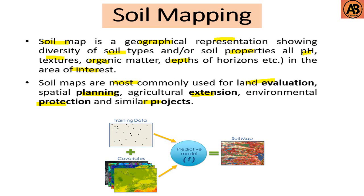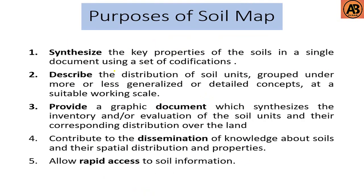The purposes of a soil map are: first, to synthesize the key properties of soils in a single document using a set of codifications; second, to describe the distribution of soil units grouped under more or less generalized or detailed concepts at a suitable working scale; third, to provide a graphic document which synthesizes the inventory or evaluation of soil units and their corresponding distribution over the land; fourth, to contribute to the dissemination of knowledge about soils and their spatial distribution and properties; and fifth, to allow rapid access to soil information.